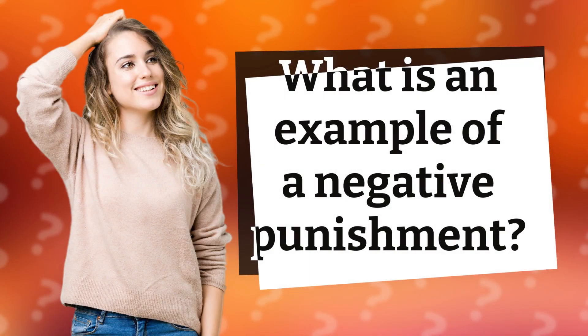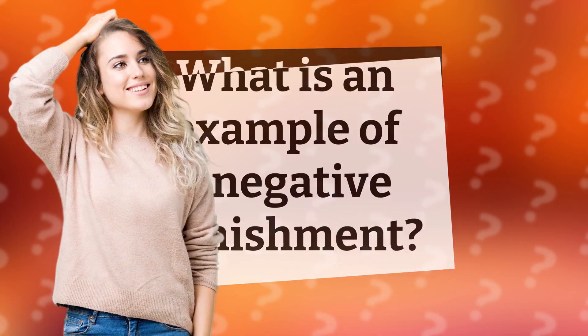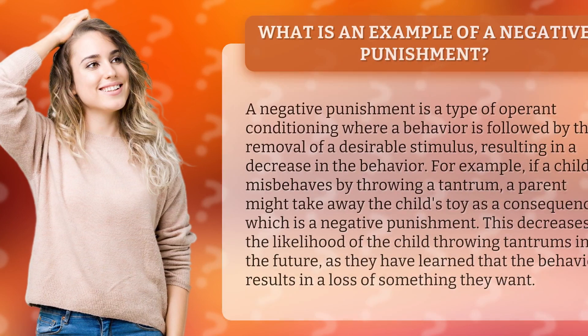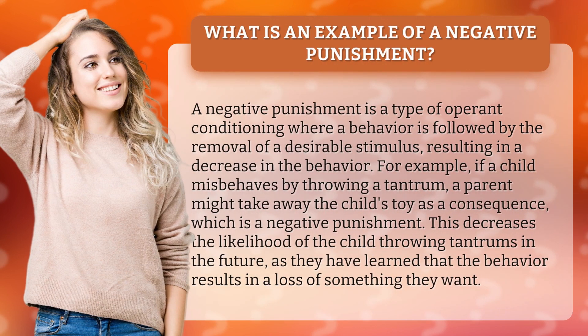What is an example of a negative punishment? A negative punishment is a type of operant conditioning where a behavior is followed by the removal of a desirable stimulus, resulting in a decrease in the behavior.